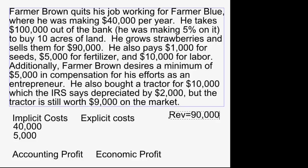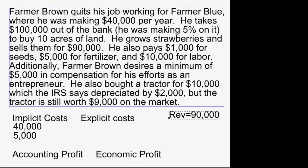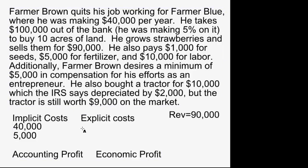When he buys seeds, is that explicit or implicit? He actually has to pay for them — money moves from him to someone else — so that's an explicit cost. Same with the fertilizer, and the $10,000 he pays his workers, because money in some form — cash, check, or credit card — has to move from Farmer Brown to someone else. Let's lump those together as $16,000 in explicit costs.